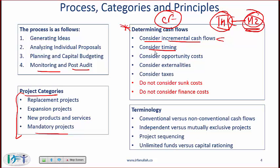Consider timing. We need to worry about time value of money — $100 after one year is very different from $100 after three years. When you do your cash flows, you need to know when the cash flow is coming. Simplistically, we aggregate cash flows in a given period and show those cash flows at the end of the period. Also consider opportunity costs: if you are using your own facility that you could rent out for $100, that $100 needs to be considered as a cost.